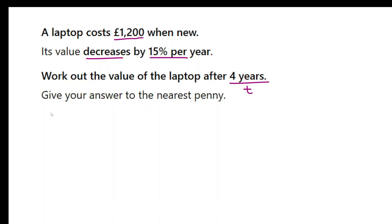We need to work out the multiplier. So 100% take away 15%, 100 take away 15 gives me 85%. As a fraction, that is 85 out of 100. This is 0.85.